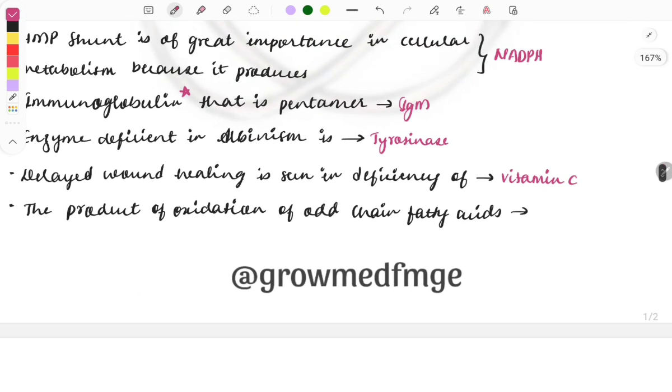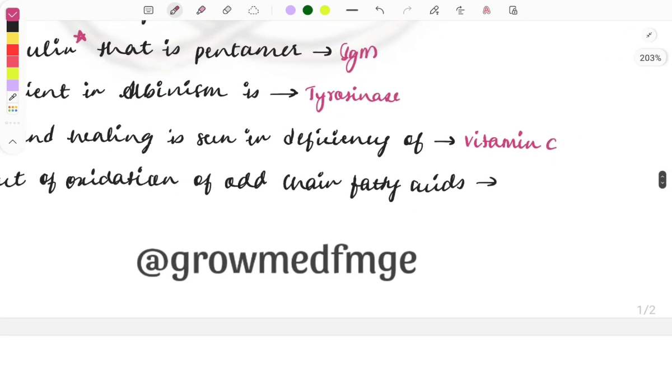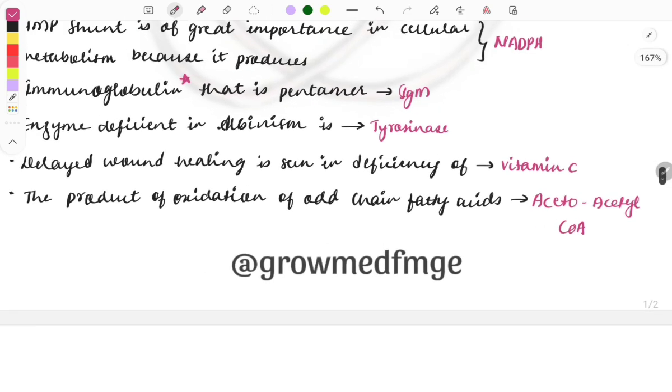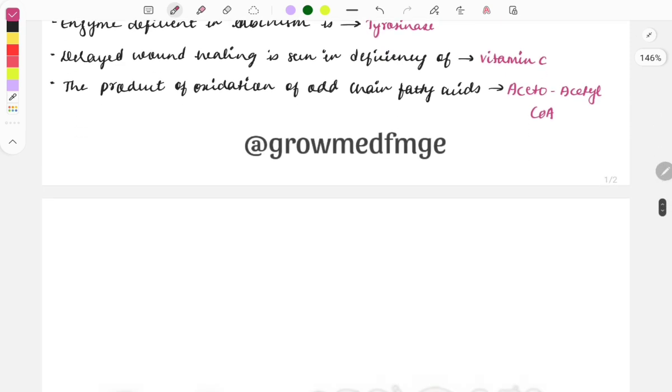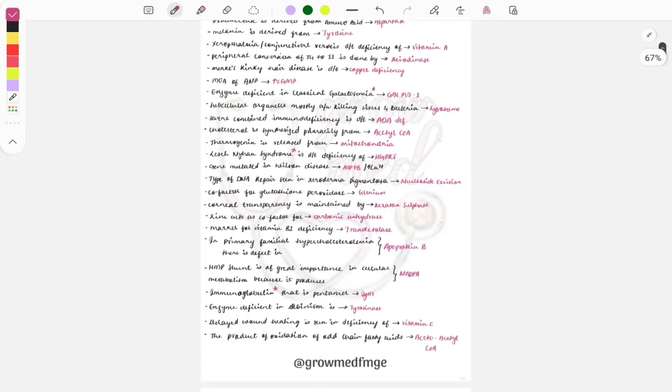The products of oxidation of odd chain fatty acid is acetoacetyl coenzyme A. So the product of oxidation of odd chain fatty acid.